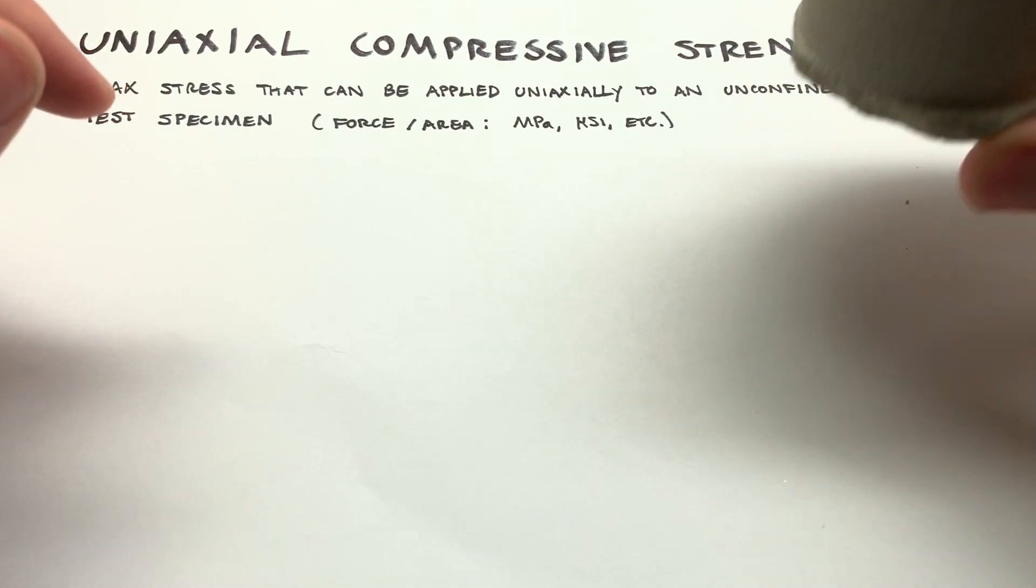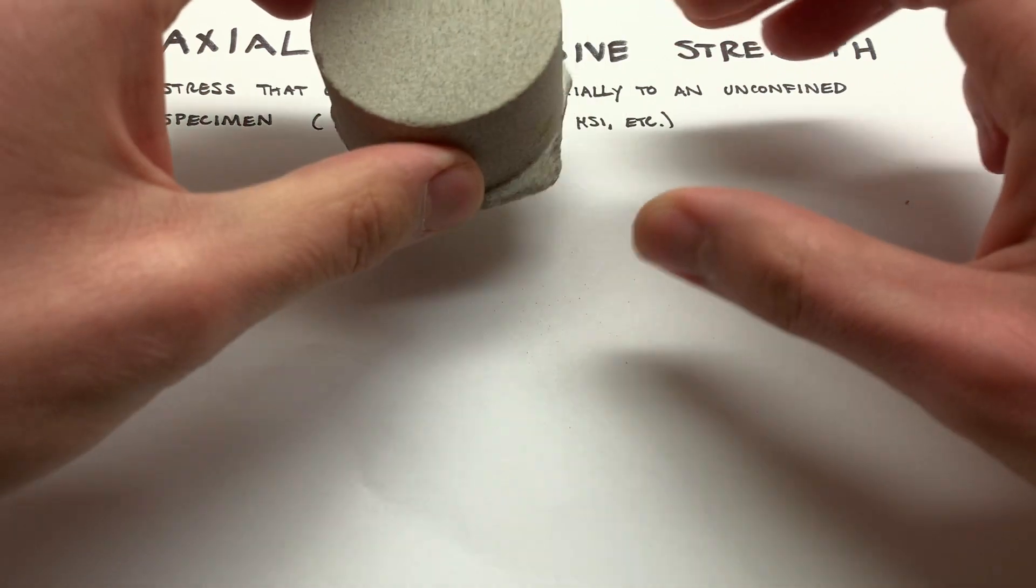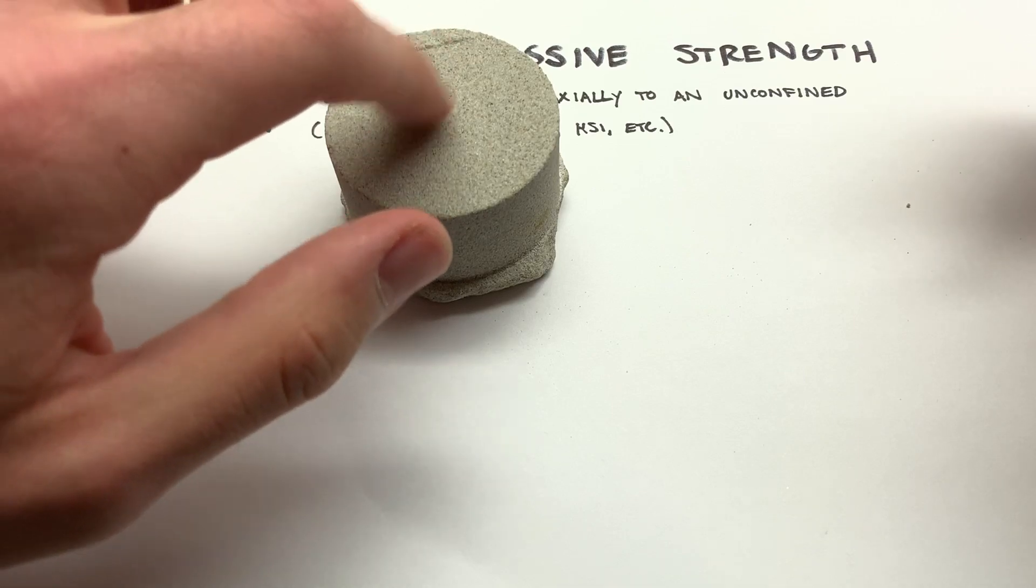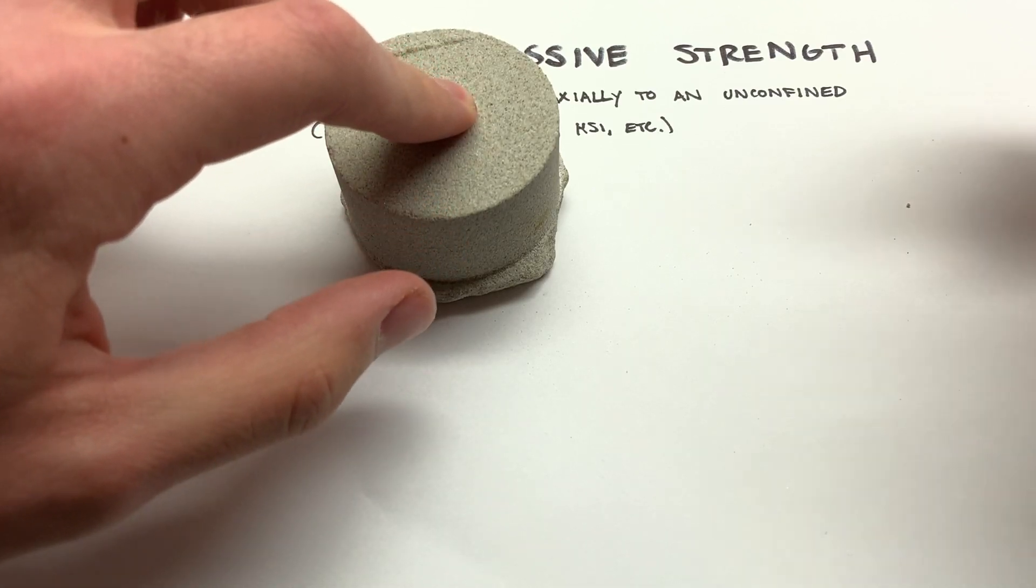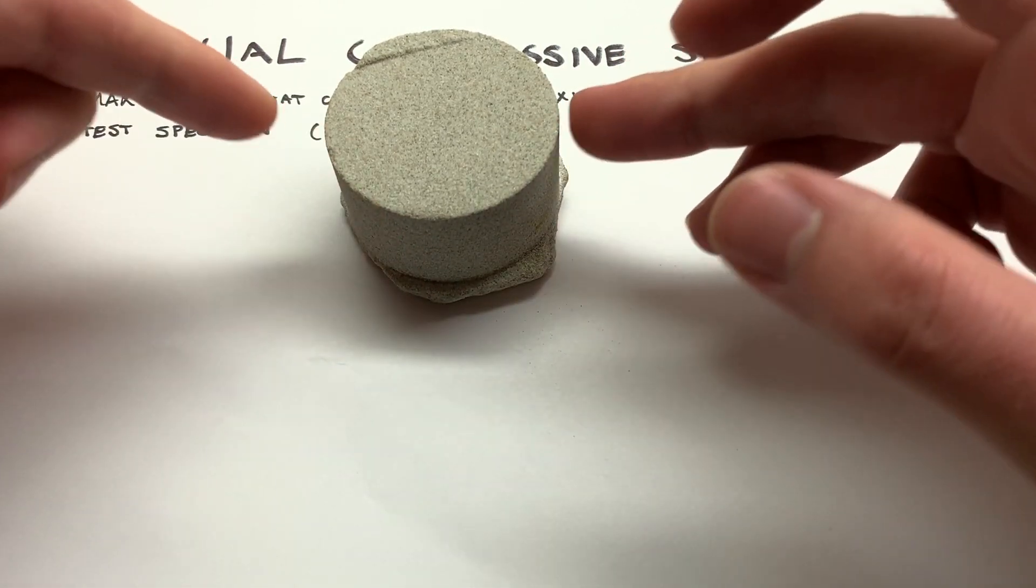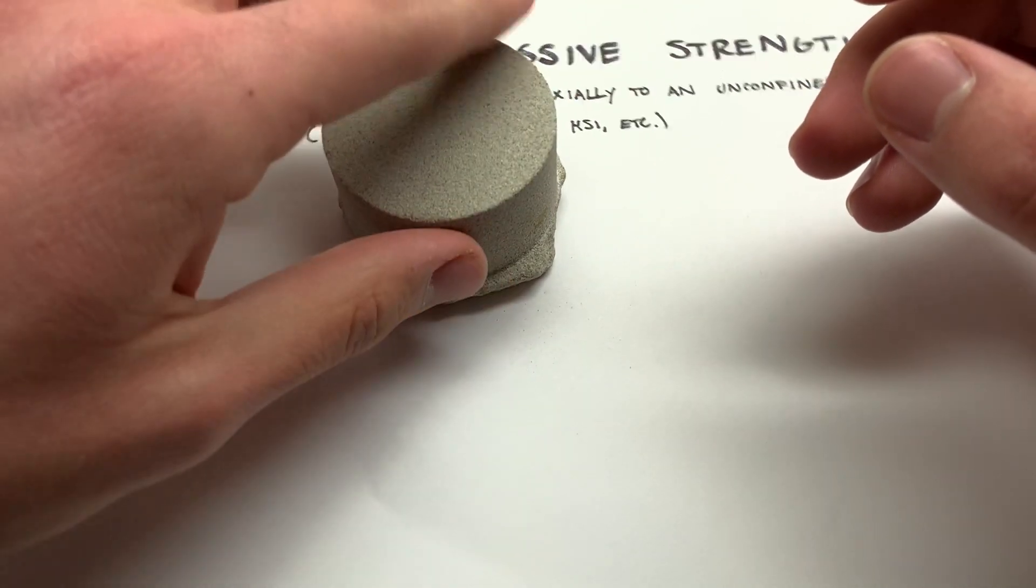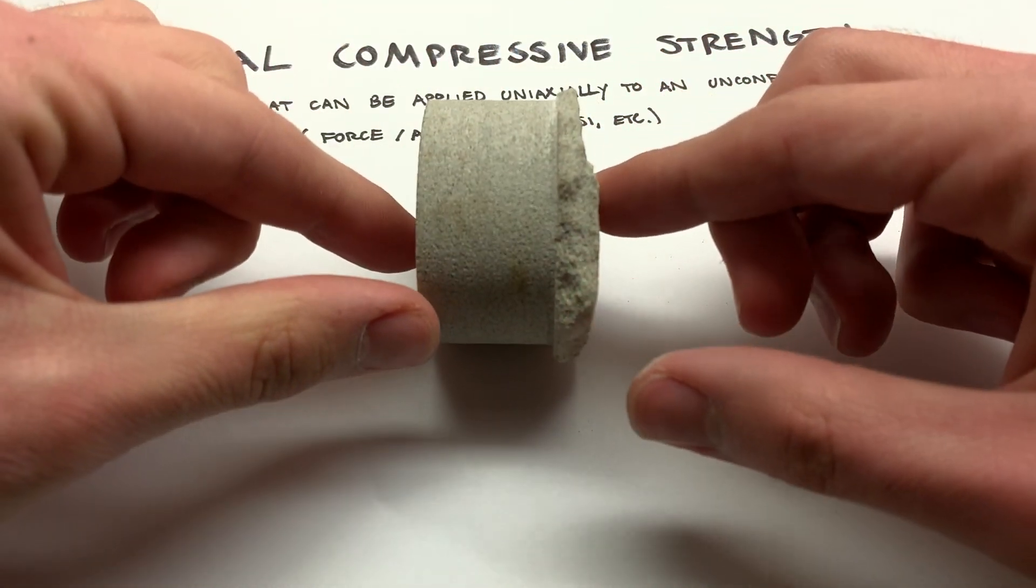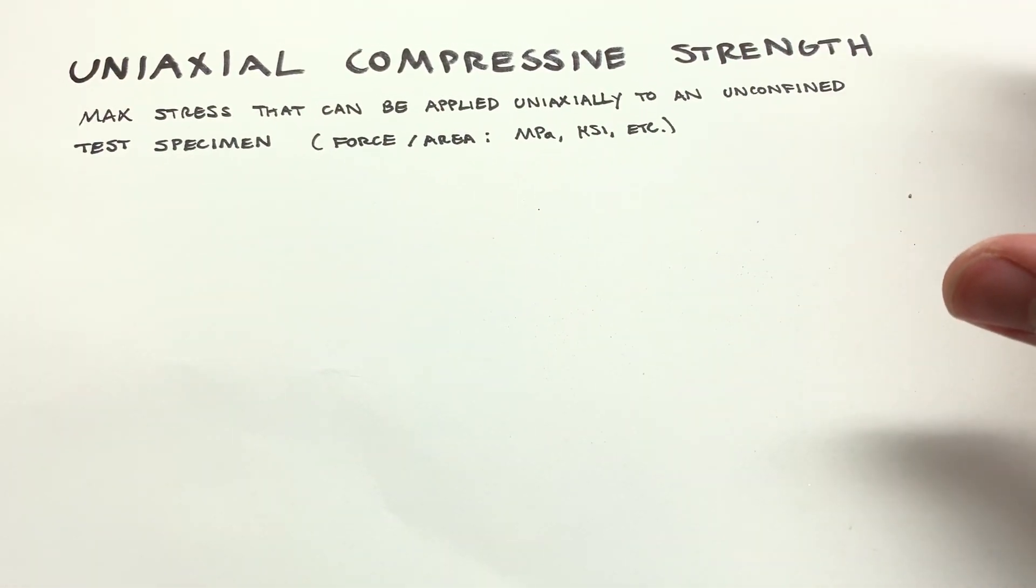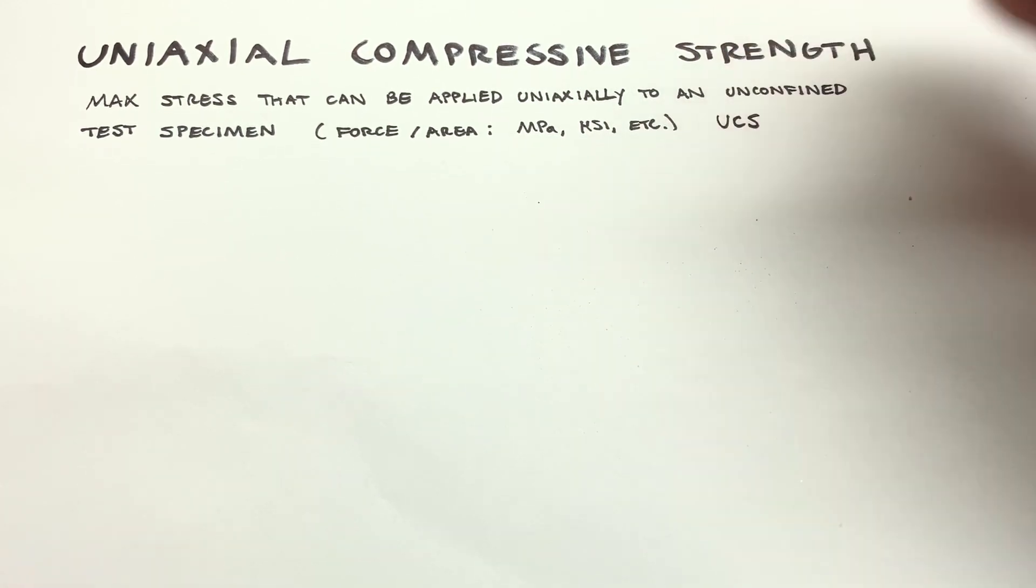If we have a specimen of rock, pretend this is a nice core sample here, we think of uniaxially compressive - we're applying a stress along its axis and it is unconfined. There's no confining pressure like there would be in nature along the diameter here in the radial direction. We're just putting it in a press and compressing it downwards. Of course you'd have stress on both sides and you'd see when it breaks. That's going to give you the maximum stress it can hold, and that's going to be your uniaxial compressive strength, or sometimes we'll write it UCS for short.